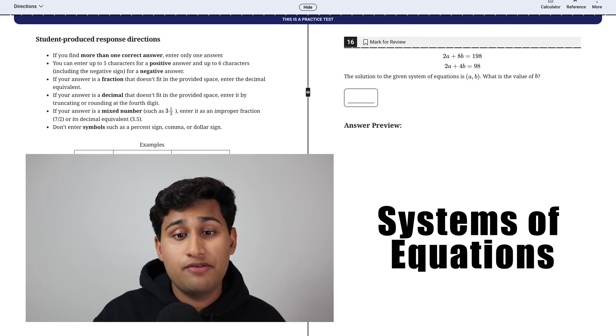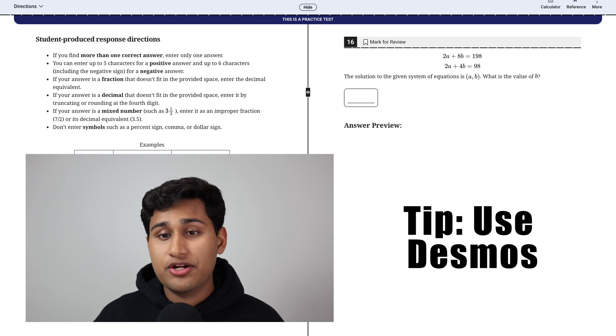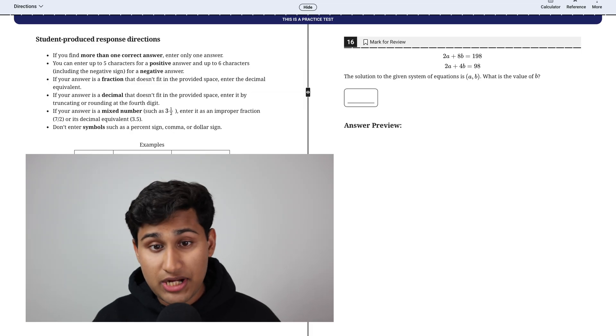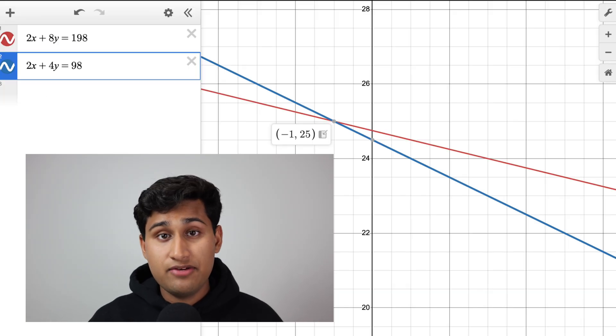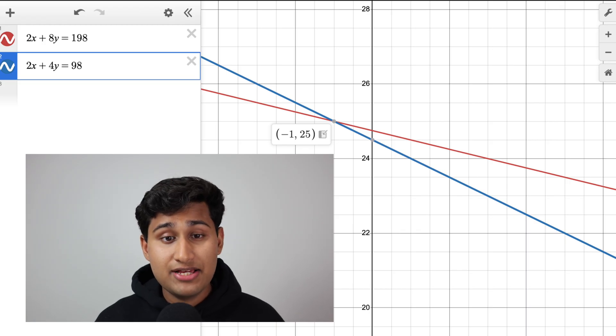So this next question is systems of equations. This is asked a lot on the SAT and it's a very easy question to miss. And for all these systems of equations questions, literally just use Desmos and graph the equation and wherever they intersect is your answer. Here that answer is 25. And if you look at this screenshot of Desmos, you can see that here instead of A, I used X and instead of B, I used Y. And they're asking what the value of B is, which is Y.